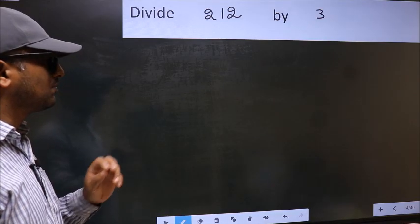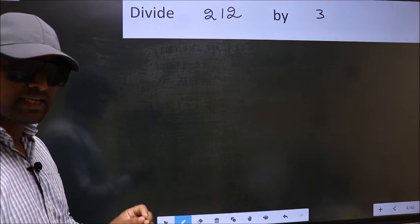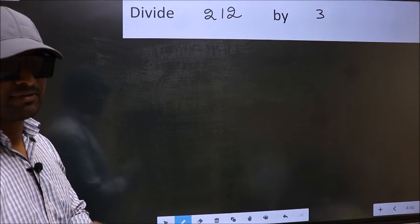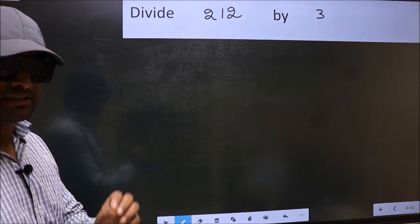Divide 212 by 3. While doing this division, many make a mistake. What is the mistake that they do? I will let you know. But before that, we should frame it in this way.